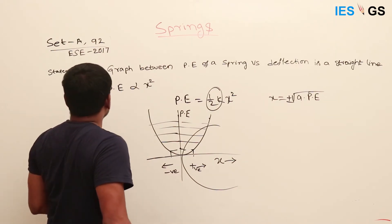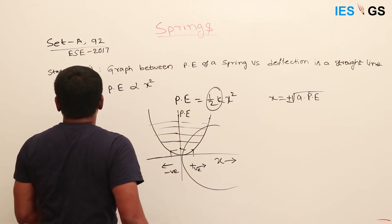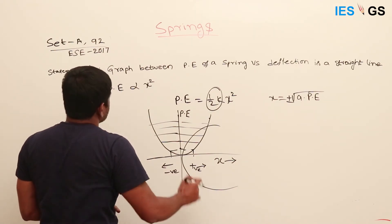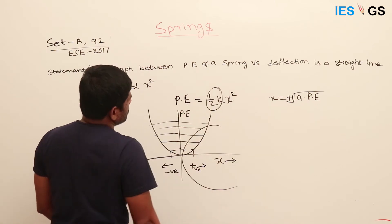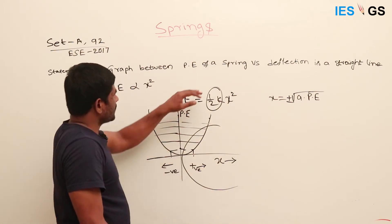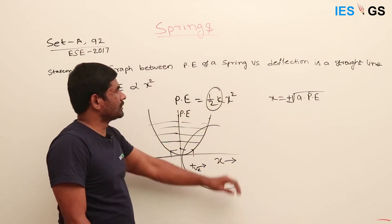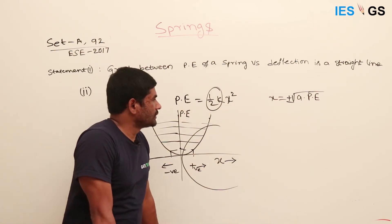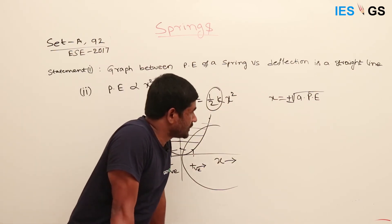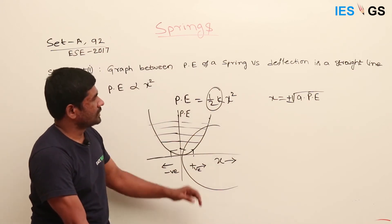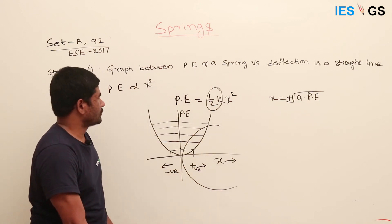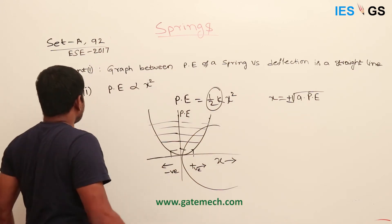Statement 1 says the graph between PE of a spring versus deflection is a straight line — but it is not a straight line. It is a parabola. So Statement 1 is wrong.